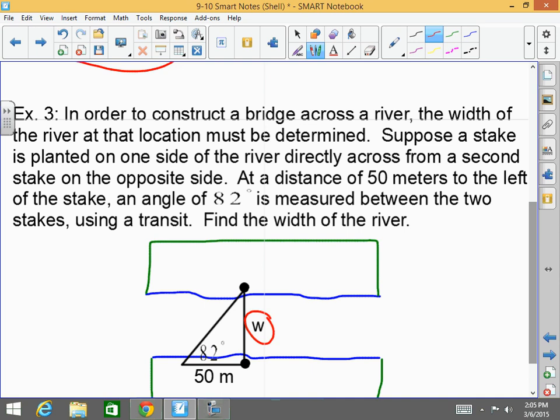Now, suppose that a stake is planted at one side of the river directly across from a second stake. So let's say here are my stakes. At a distance of 50 meters to the left of the stake, an angle of 82 degrees is measured between the two stakes. Right here, guys, this is where I would put my transit. That's where the surveyor would be. Why? Because I can measure a horizontal distance on land with a measuring tape. It's actually not a measuring tape, it's a wheel that they use. I don't know if you've ever seen anyone evaluate the price of a home. It's called an appraiser and they'll walk and it's a wheel and it calculates using the circumference of the circle, geometry, the distance.